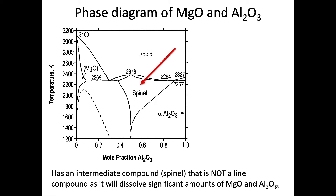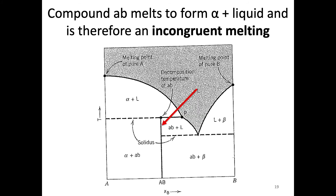Spinel is an intermediate compound, but unlike the previous AB line compound, it has a significant area on the phase diagram — not just a line. This means that within the spinel region, you can vary the composition — add more magnesium or more aluminum — and still remain in the same spinel structure. There's some wiggle room; the structure accommodates compositional variability. You have to vary it quite a lot before you start forming magnesium oxide or aluminum oxide instead.